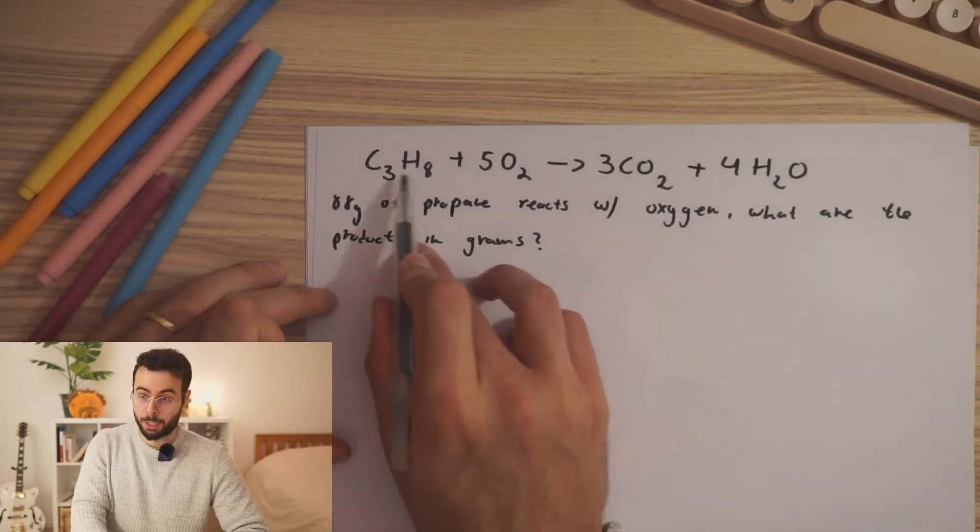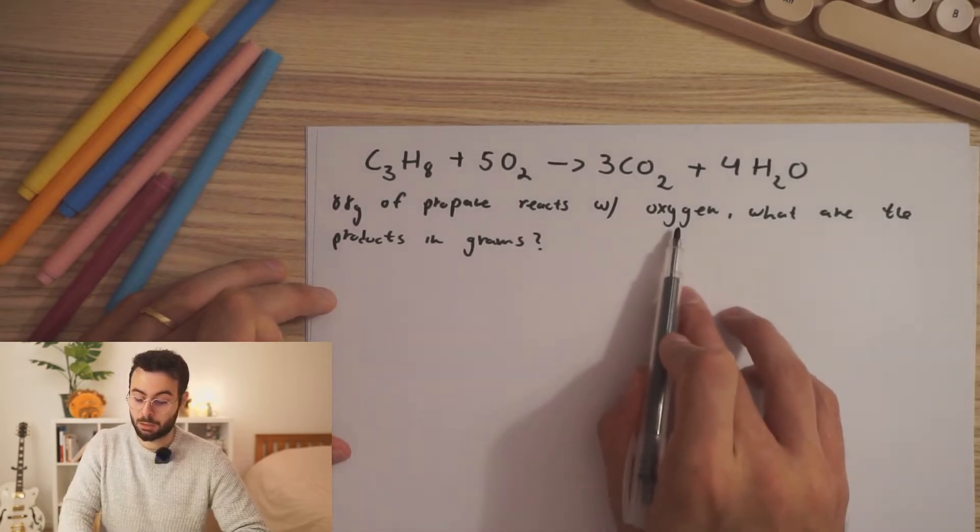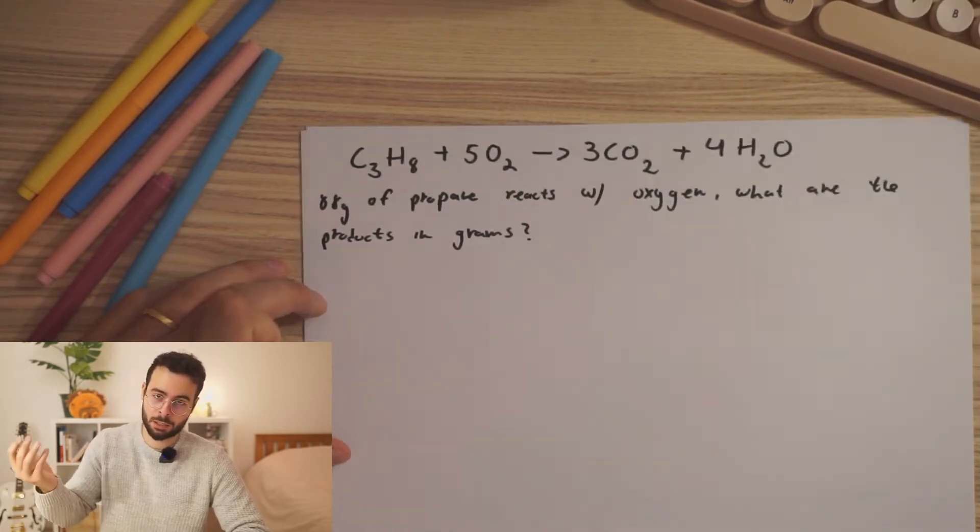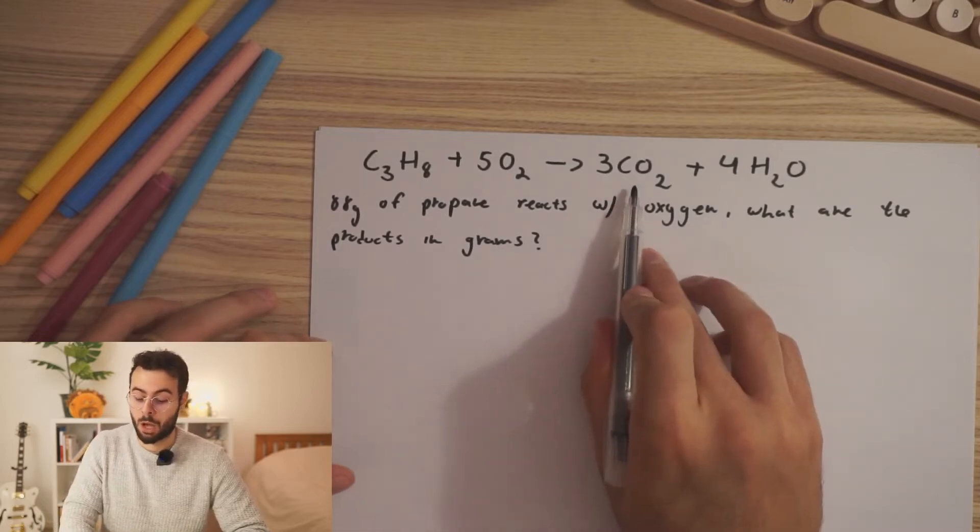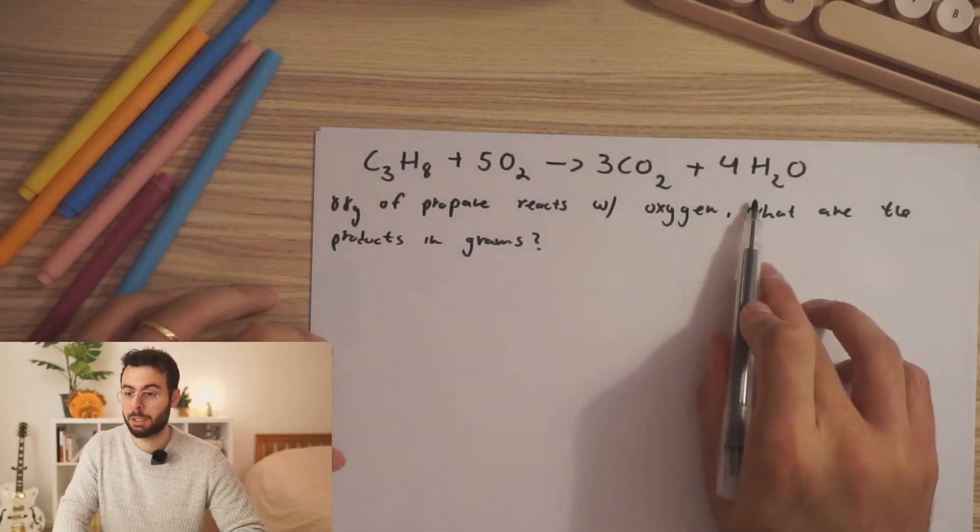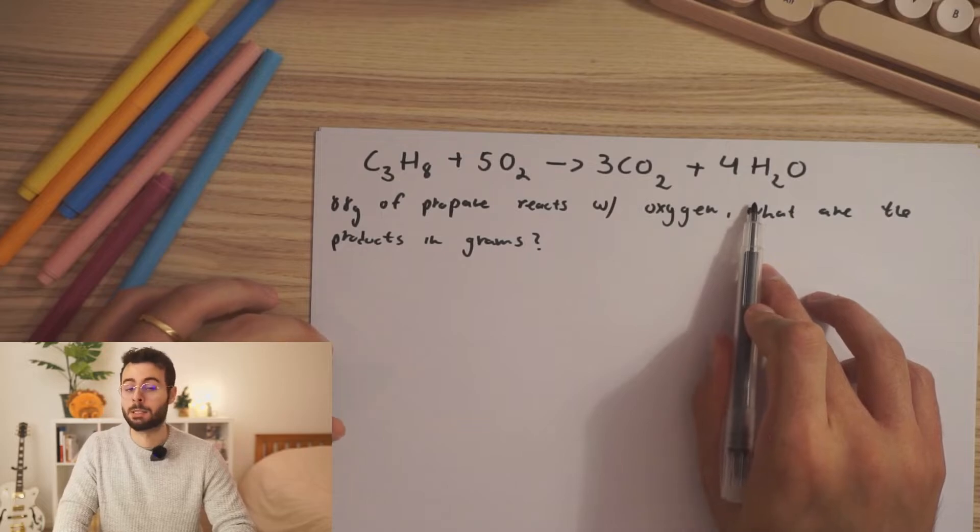88 grams of propane over here reacts with oxygen. So we have an unlimited amount of oxygen. What are the products in grams? So how many grams of carbon dioxide and how many grams of water do we get in this reaction?